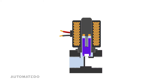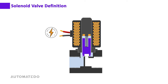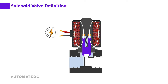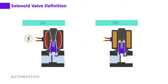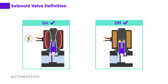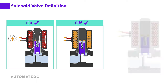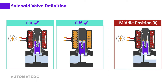The solenoid valve is an electromechanical actuator that converts electrical energy into a linear mechanical push or pull action. It is an on-off operated valve with no middle or in-between position, so it cannot throttle flow.